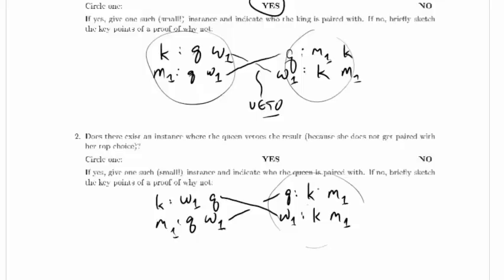And does the queen get who she wants? No, she wanted the king, and so she will veto. So sure enough, this is also possible, and the whole Gale-Shapley algorithm with women proposing was a red herring.